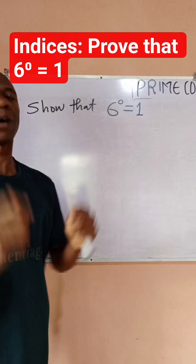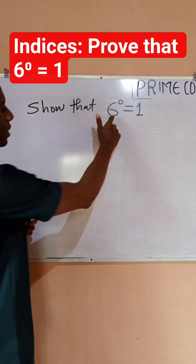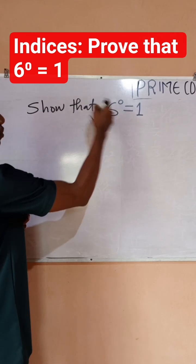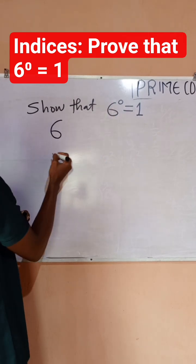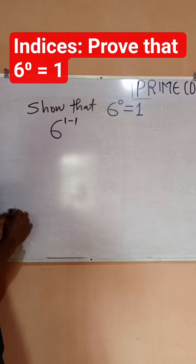We want to prove that a number raised to power of 0 would be 1. So let's do this, follow through this video to learn the concept. Now 6 raised to power 0, we can write this as 1 minus 1, right? Yes, because 1 minus 1 will still give you 0.